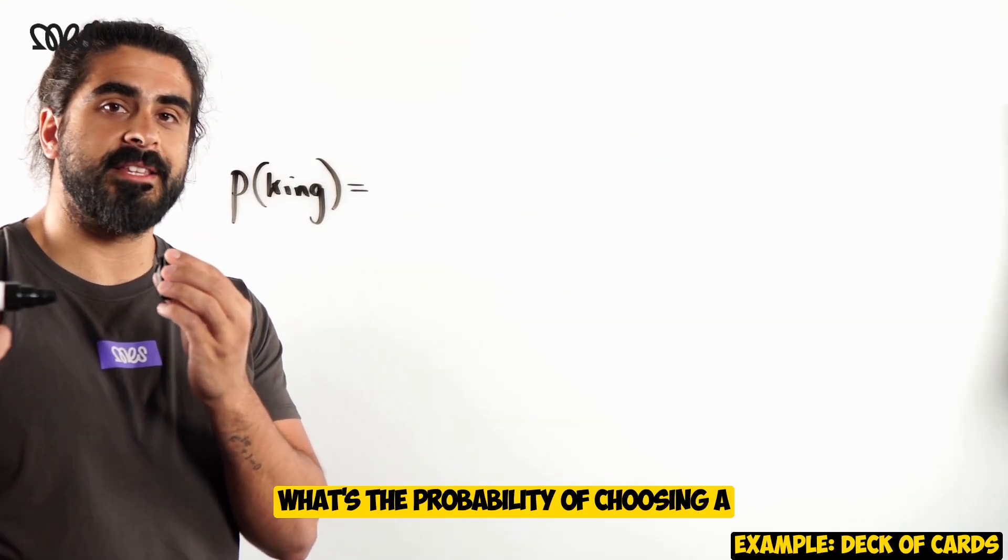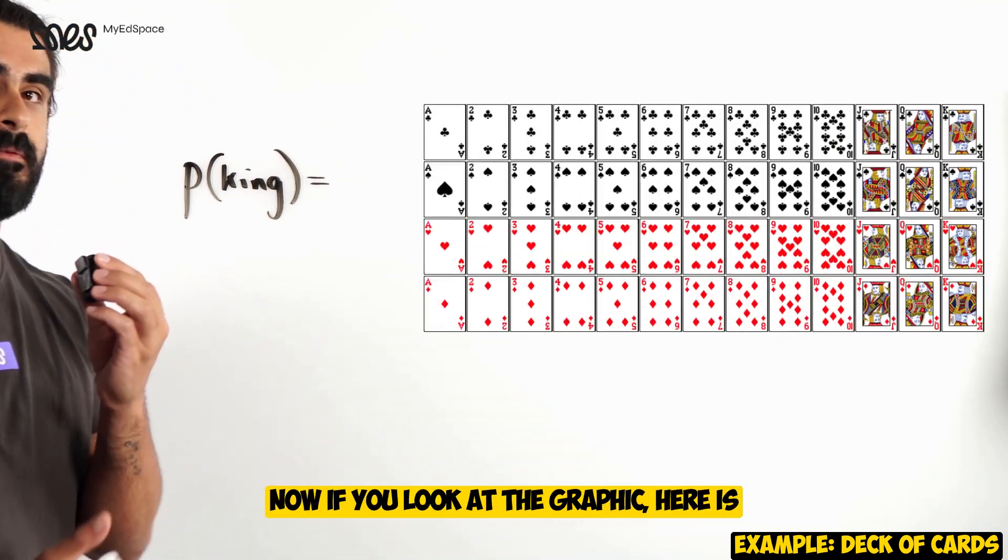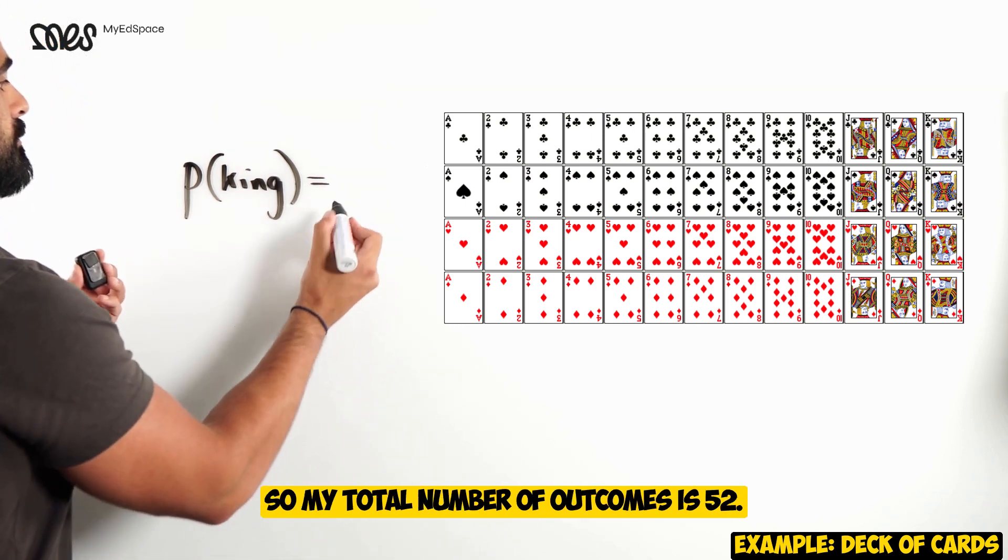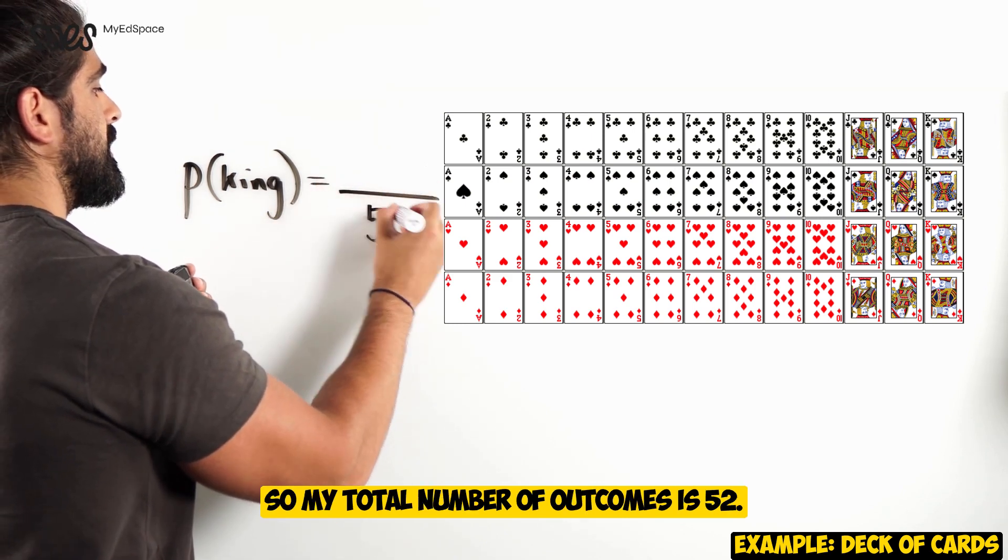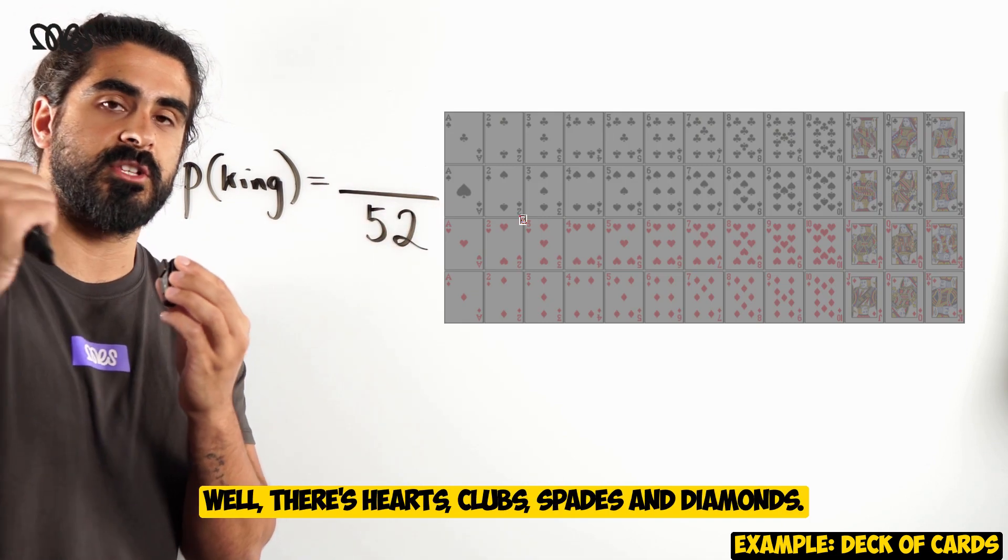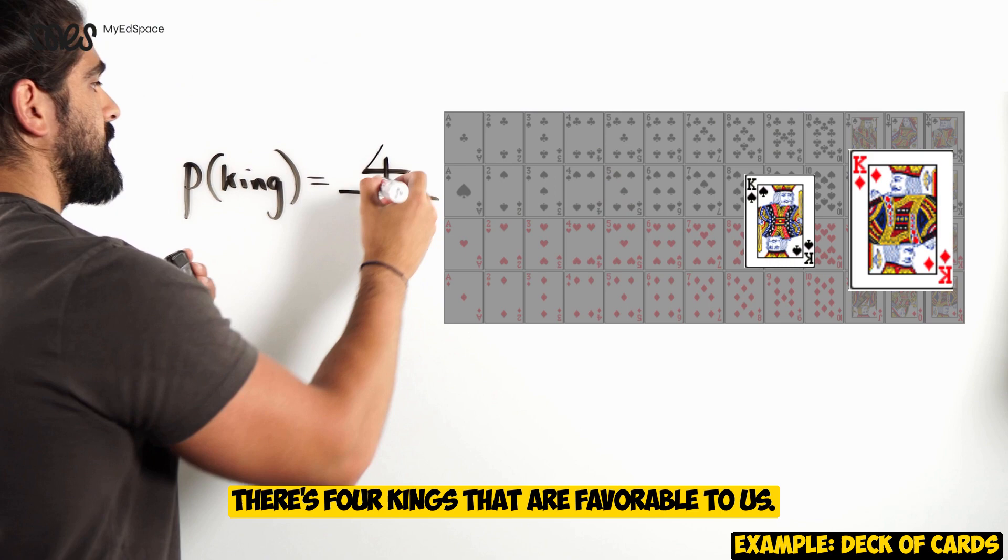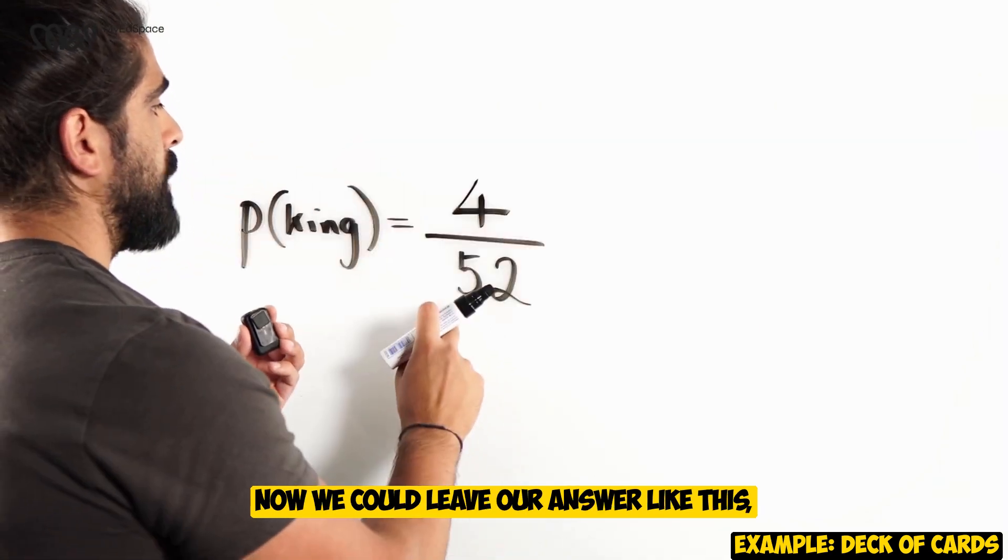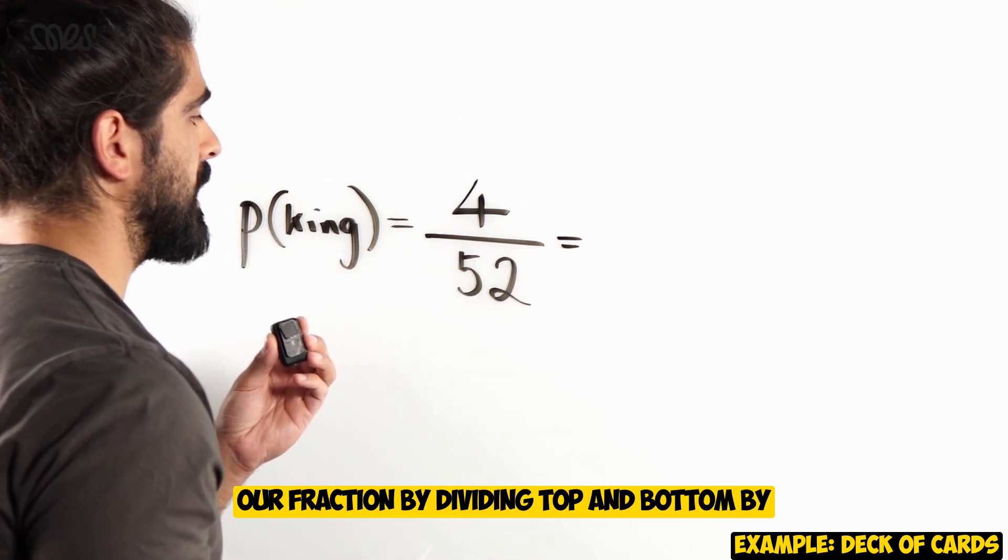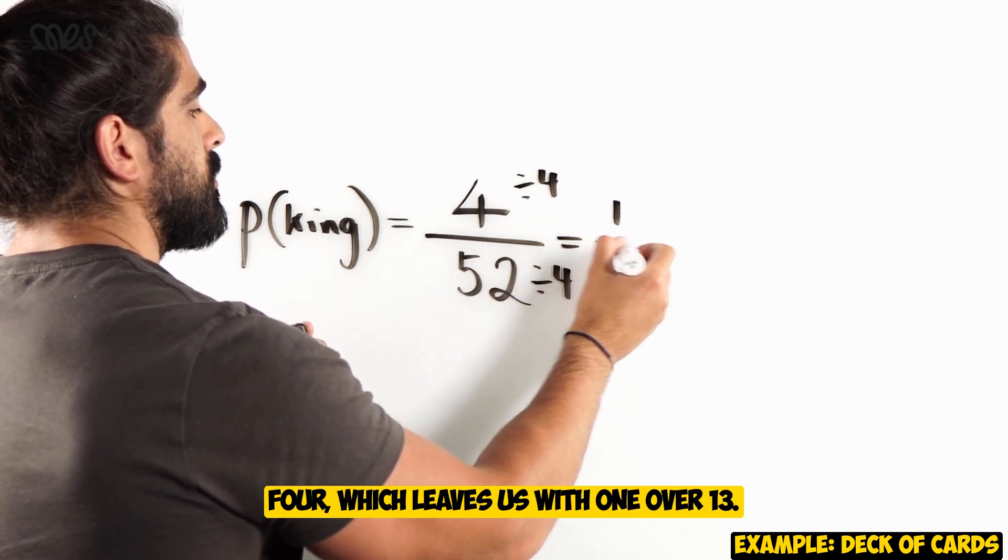Let's look at another example. Next example. What's the probability of choosing a king in a deck of cards? Now, if you look at the graphic, here is a full set of cards. There's 52 cards. So, my total number of outcomes is 52. And then if you were to count how many kings are there, well, there's hearts, clubs, spades, and diamonds. There's four kings that are favorable to us. Now, we could leave our answer like this, but you should notice that we can simplify our fraction by dividing top and bottom by four, which leaves us with 1 over 13.